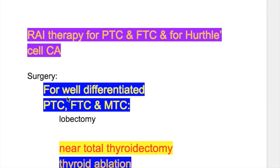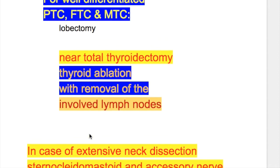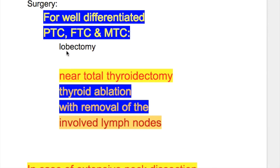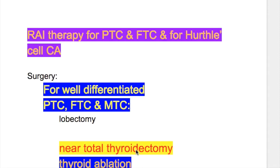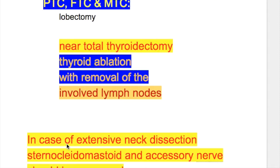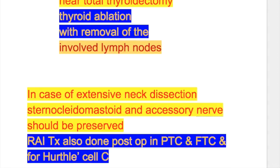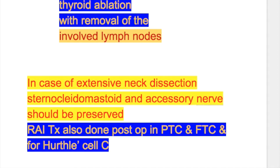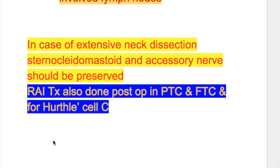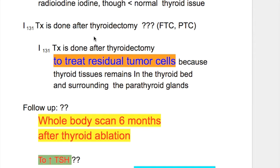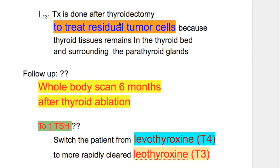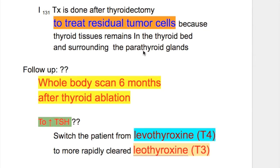Surgery is performed for well-differentiated papillary, follicular, and medullary thyroid carcinoma. Lobectomy may be done for small tumors, with the advantage of avoiding damage to the recurrent laryngeal nerve and hypothyroidism. For larger tumors, near-total thyroidectomy or thyroid ablation with removal of involved lymph nodes is performed. In extensive neck dissection, sternocleidomastoid and accessory nerves should be preserved. Postoperative radioactive iodine is also given for papillary, follicular, and Hürthle cell carcinoma to treat residual tumor cells remaining in the thyroid bed.